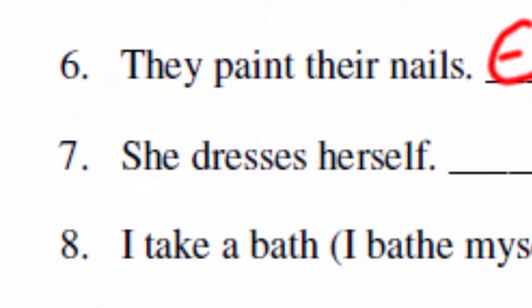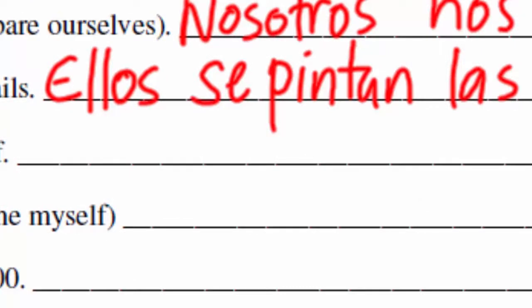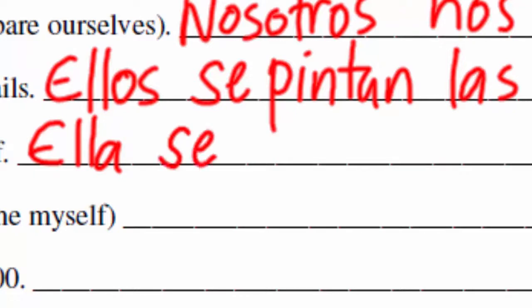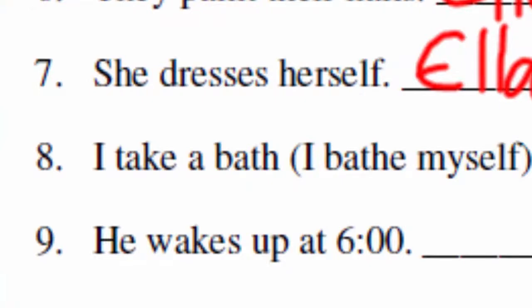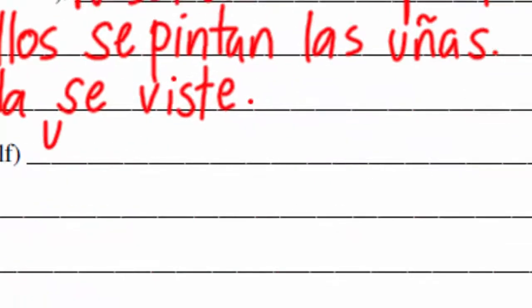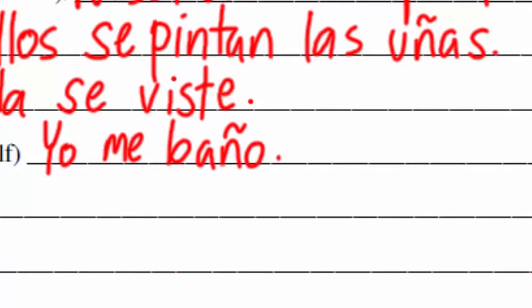'She dresses herself' — our verb is vestirse. Ella is the subject; the pronoun would be se. She dresses: viste. So: ella se viste. 'I take a bath': bañarse — I bathe myself. It's yo, so the pronoun is me. The verb is baño: yo me baño — I bathe myself.